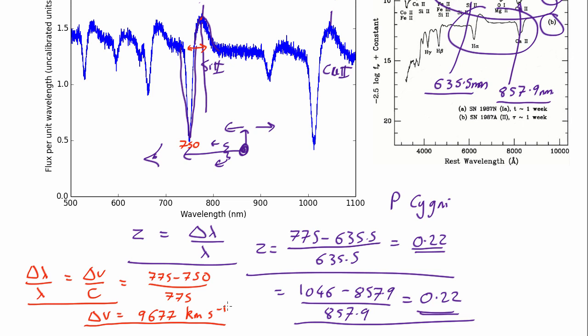So when you see something like this you can work out the redshift, you can work out the speed at which the gas is flowing out, and you can work out what type of supernova it is.